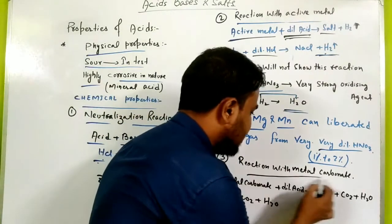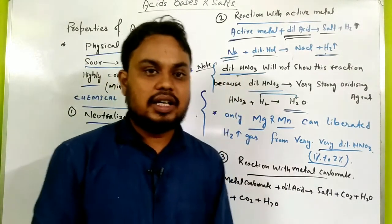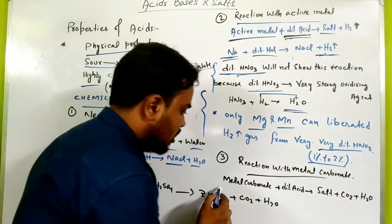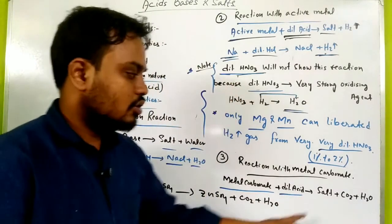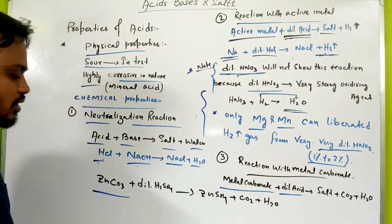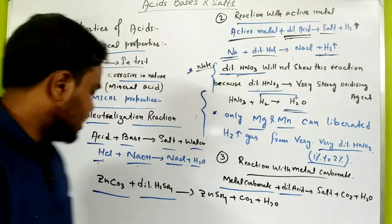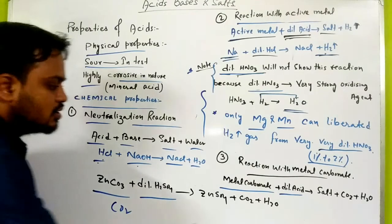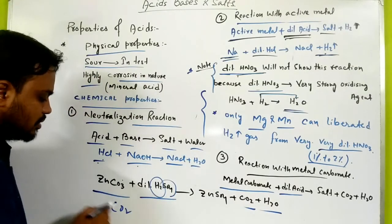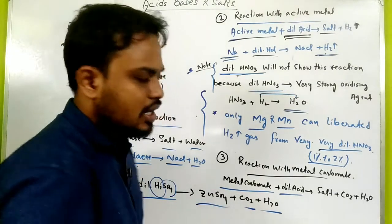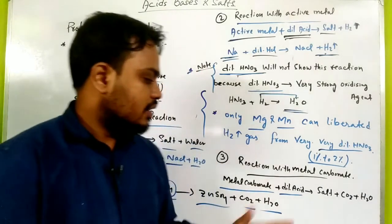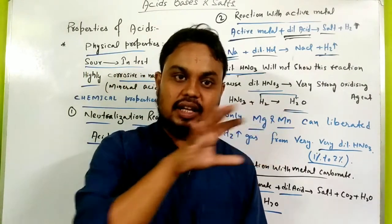Now let's look at the reaction with metal carbonate — we have studied this many times. When metal carbonate reacts with acid, carbon dioxide and water are formed. To remember easily: metal carbonate reacts with acid to form CO2, water, and the remaining salt.